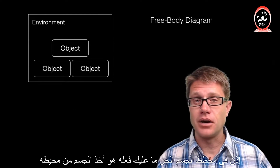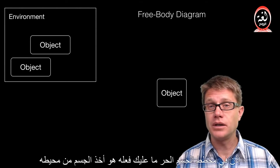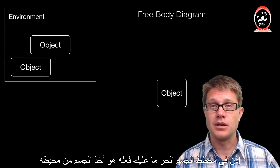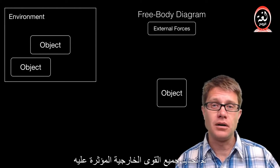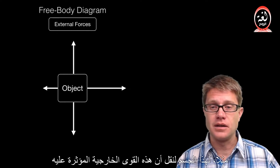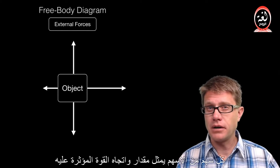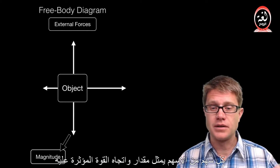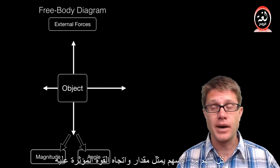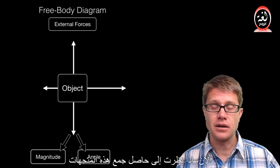In a free body diagram you are taking an object and removing it from its environment, and then you are going to label all of the external forces acting on it. Each of those arrows represents both the magnitude and the direction of that force which is acting on the object.